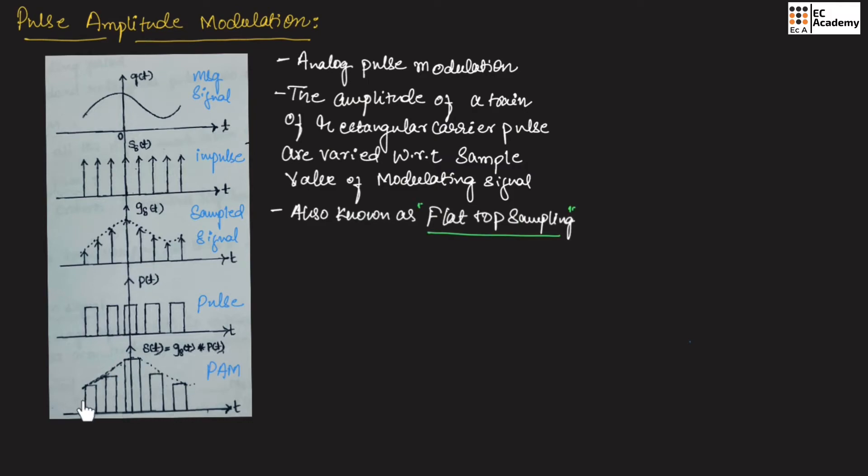This is the waveform of PAM signal. Here S of T denotes the sequence of flat top sample or PAM signal and we can represent S of T as summation of N equals minus infinity to infinity G of NTS into P of tau minus NTS. Let us take this as equation number 1. Since S of T is convolution of G delta of T and P of T, we have written G delta of T and P of T in terms of convolution formula.